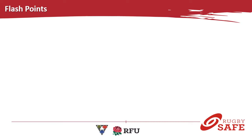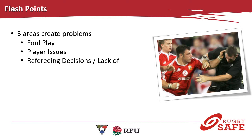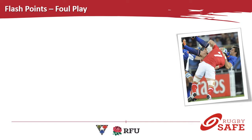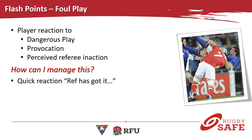We also talk about flashpoints — what are they and why do they occur? There are three areas that create problems: foul play; issues between players; and the referee's decisions or, in some cases, the lack of them. These can cause the flashpoints that create those scuffles or fights. You must ask yourself what your responsibility is in managing flashpoints and hopefully preventing them. Foul play is generally a player reaction to something dangerous, to provocation, or to perceived referee inaction. If you do a quick reaction, you'll often hear players saying 'relax, the ref's got it, the ref has seen it, leave it, he's dealing with it.' That reaction from captains and other players is key for keeping a lid on things that can escalate very, very quickly.